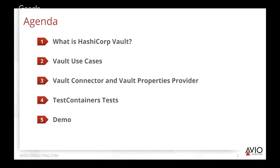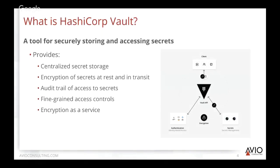I'm going to walk through what a vault is, some vault use cases, the vault connector, vault properties provider, some of the tests we created, as well as demoing the provider and connector. Vault is the tool for securely storing and accessing secrets. It provides centralized secret storage, encrypts secrets at rest and in transit, provides an audit trail of access, fine-grained access controls, and encryption as a service. There's an open source version and an enterprise version with additional features like replication across multiple sites.